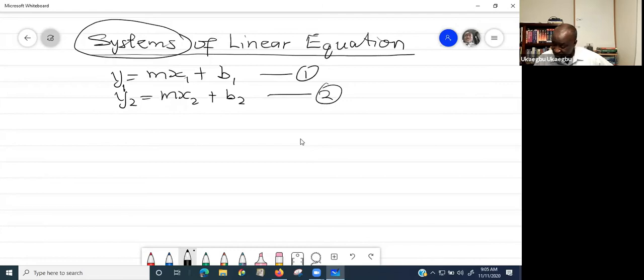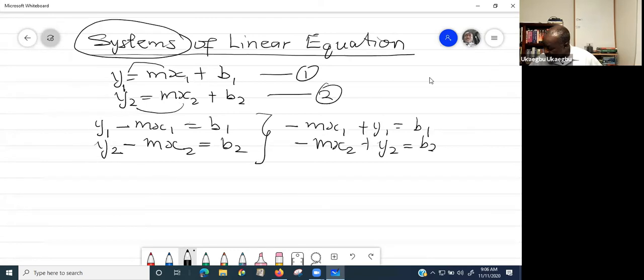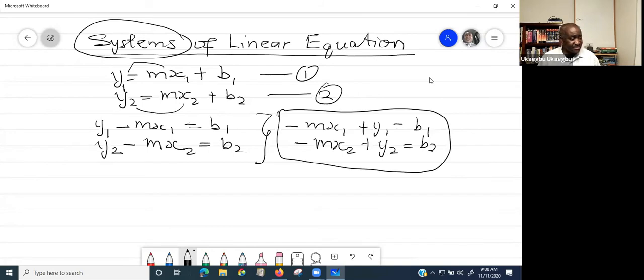So if you decide to transpose this one to the left side, you are going to get y1 minus mx1 equal to b1. If you repeat the same thing on this one, you are going to have y2 minus mx2 equal to b2. If you rearrange it, you can rearrange this thing to be negative mx1 plus y1 equal to b1. Or you can rearrange the second one to be negative mx2 plus y2 equal to b2. So any time you have two equations with two unknowns, you can arrange it in this form.